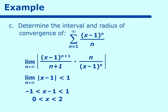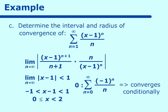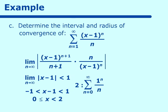Now we test the endpoints. Putting x = 0 into the series gives (-1)^n over n, which is the alternating harmonic series — it converges conditionally, so we include x = 0 with an equal sign. Putting x = 2 gives 1^n over n, which diverges, so we do not include x = 2. The interval of convergence is [0, 2). The radius of convergence is 1, since we go from 0 to 2 and halfway is 1 unit.